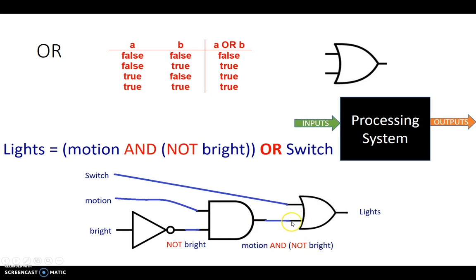That goes into one of the inputs of the OR gate. The other input of the OR gate is connected to the input called switch, so the OR gate is doing switch or motion and NOT bright to produce lights. So that's the processing system that goes in here for this particular expression.